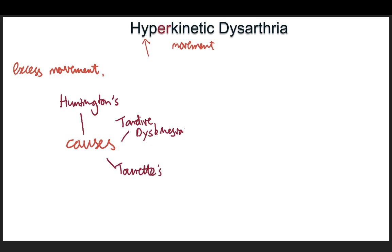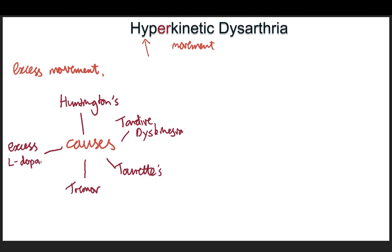Tourette's is not just about cursing and swearing — that aspect is really exaggerated and it's not the most common aspect. As a health professional, you should know more about the real Tourette's than what the media portrays. Any sort of tremor is an excess unwanted movement. Even though tremor is synonymous with Parkinson's, you don't actually get tremor of the speech apparatus all that often in Parkinson's, so Parkinson's is not typically hyperkinetic dysarthria. However, when people with Parkinson's are overmedicated with too much levodopa, that causes excess writhing movements called dyskinesias — which is technically hyperkinetic dysarthria if it affects their speech.